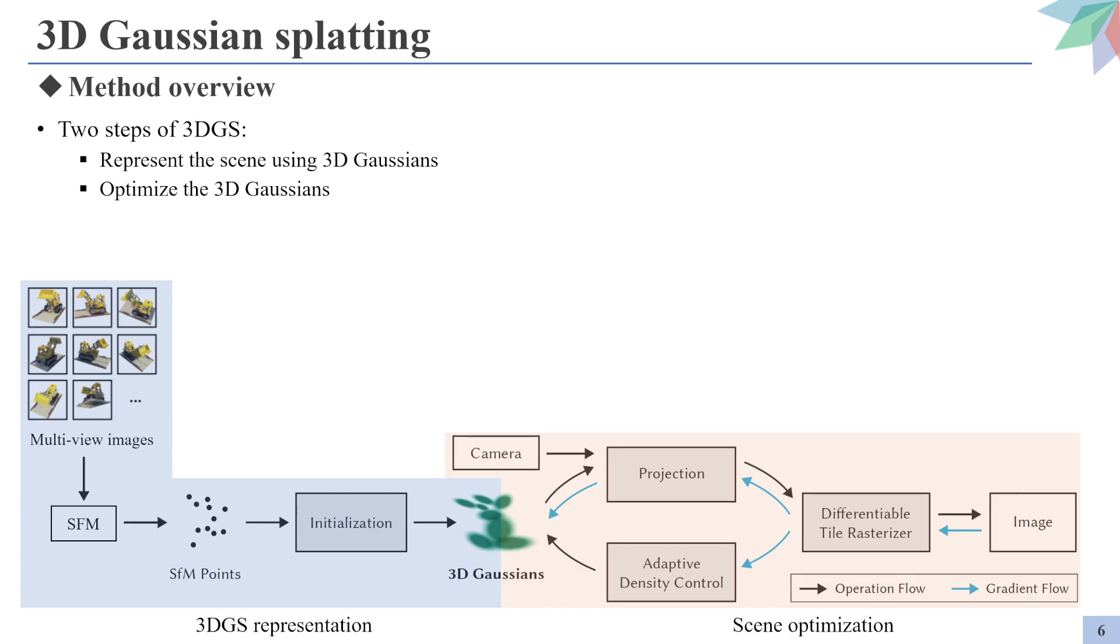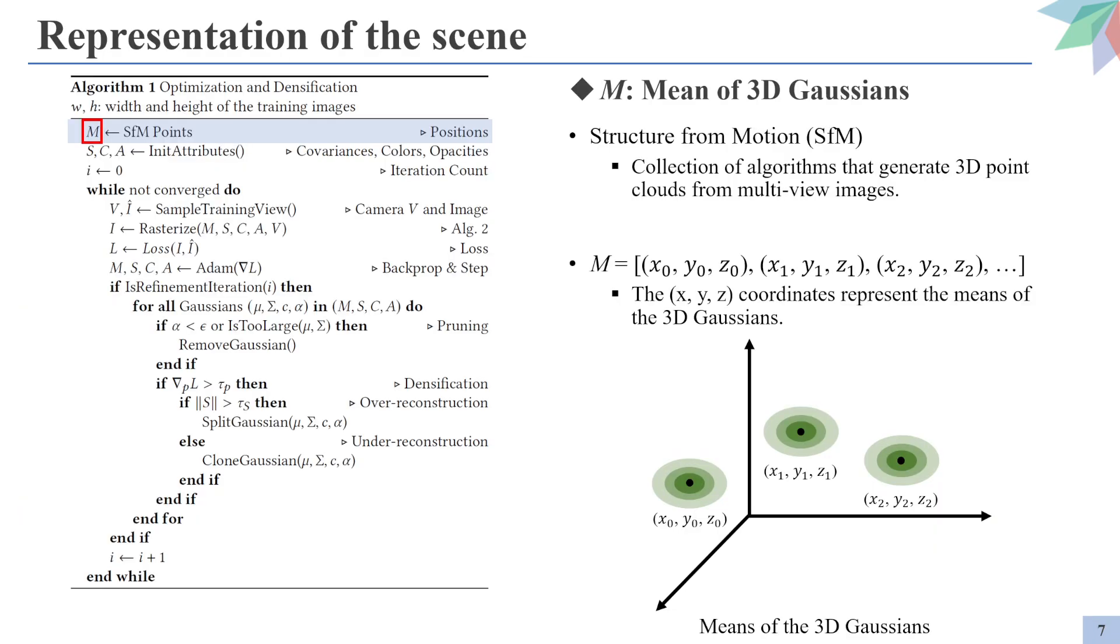The pipeline of Gaussian Splatting is shown as below. The pipeline is split into two stages, the initialization of 3D Gaussians and the optimization process that optimizes their attributes. This is the algorithm of Gaussian Splatting written in pseudocode provided by the authors. First we apply Structure from Motion onto the multi-view images to generate the sparse point clouds that approximate the scene shown in the images. The point clouds are returned as the XYZ coordinates, and these values will be set as the means of the 3D Gaussians as the image shown below.